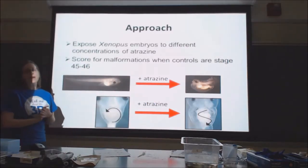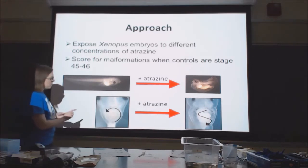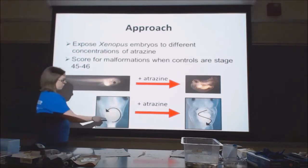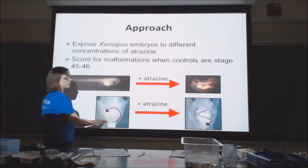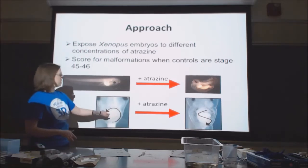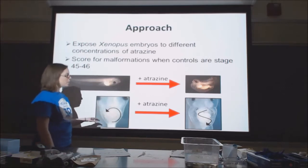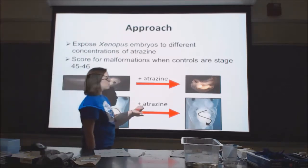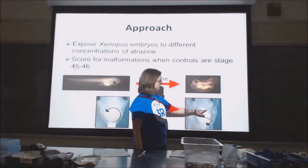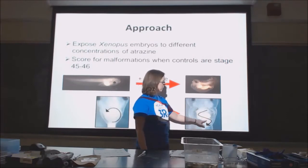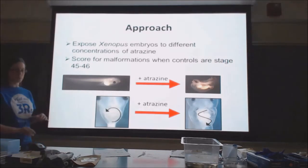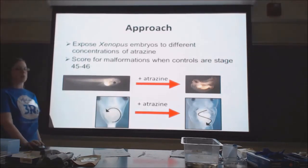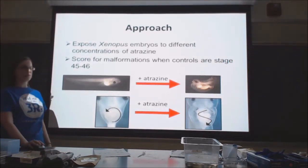To examine intestinal malformations closely: in a normal tadpole, the gut coils in a counterclockwise fashion, making a nice coil. In tadpoles exposed to atrazine, the intestine often had a straighter, non-coiled form. I counted how frequently that happened with atrazine exposure.